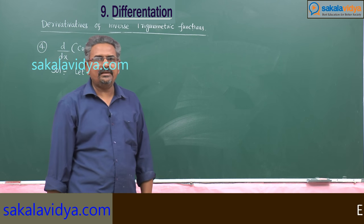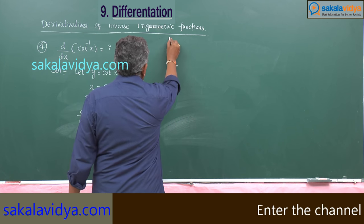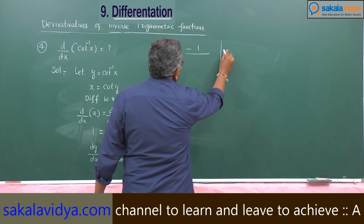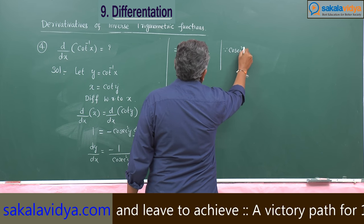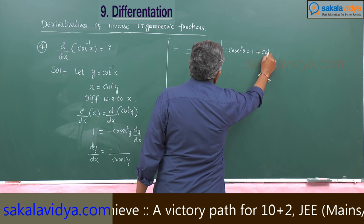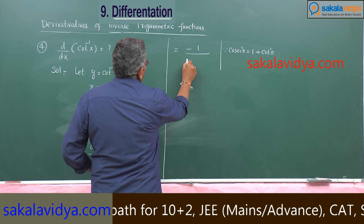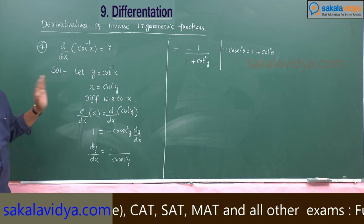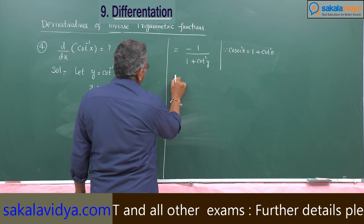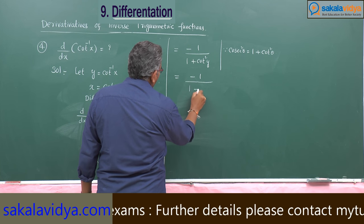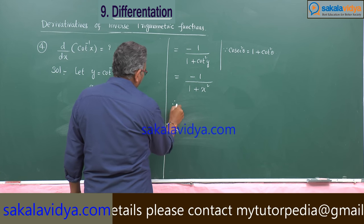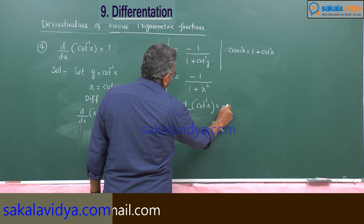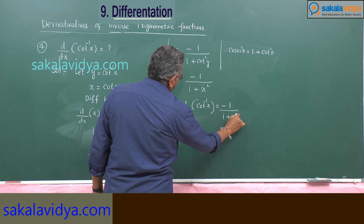We have to write cosecant square y in terms of x. From the identity, cosecant square y is equal to 1 plus cot square y. What is cot y? Cot y is nothing but x. So this becomes minus 1 by 1 plus x square. Therefore, d/dx of cot inverse x is equal to minus 1 by 1 plus x square.